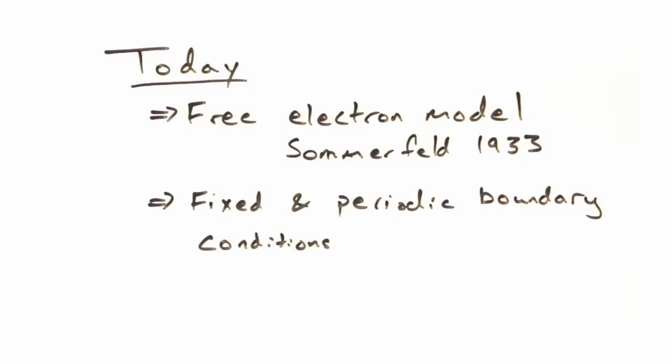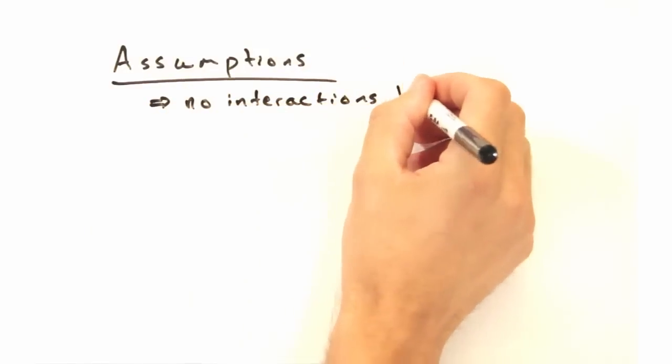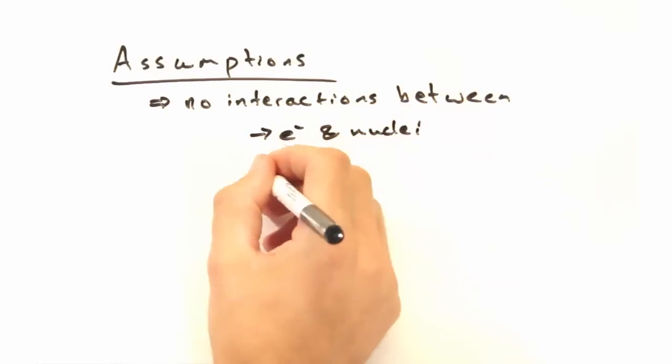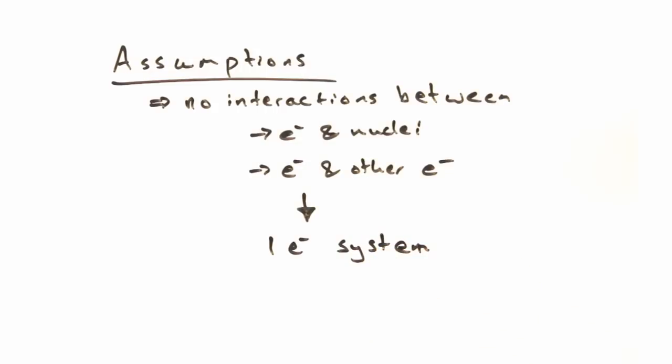Just as a reminder for those who haven't seen the free electron model, we're assuming that there are no interactions between the electron and the nuclei, or electrons with other electrons. So effectively, our system is comprised of one electron. That's right folks, only one electron in our system, and no interactions.